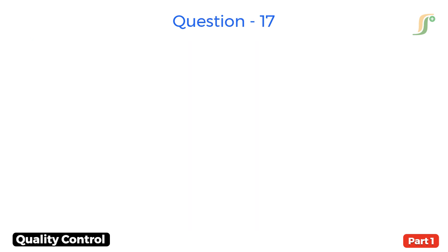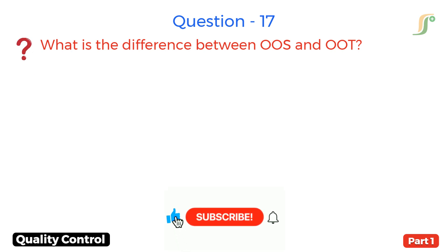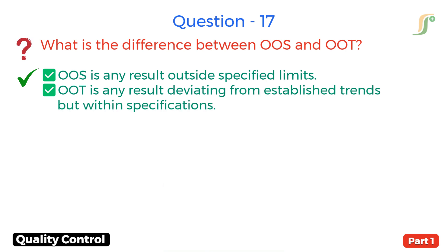Question 17. What is the difference between OOS and OOT? Answer. OOS is any result outside specified limits, while OOT is any result deviating from established trends but still within specifications.